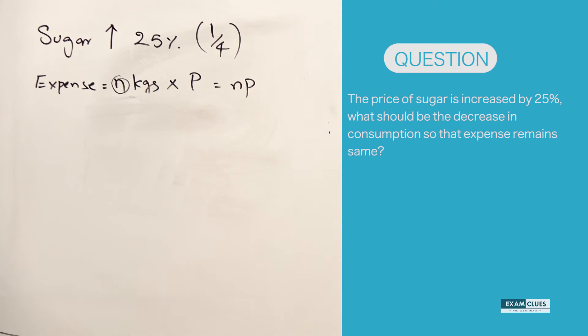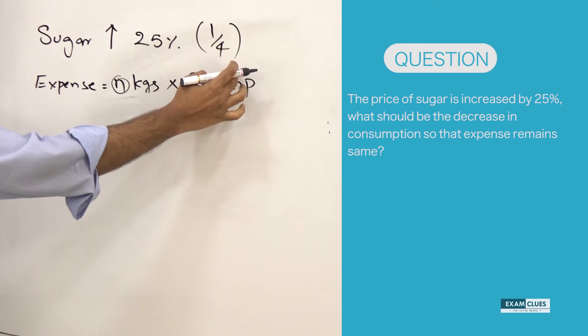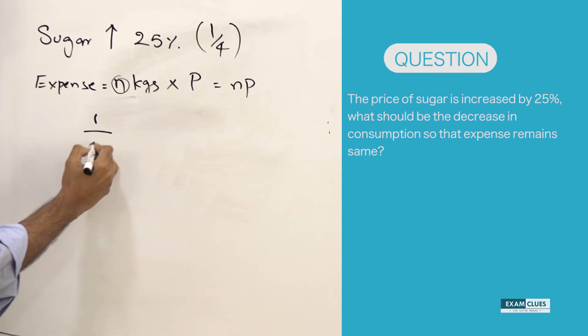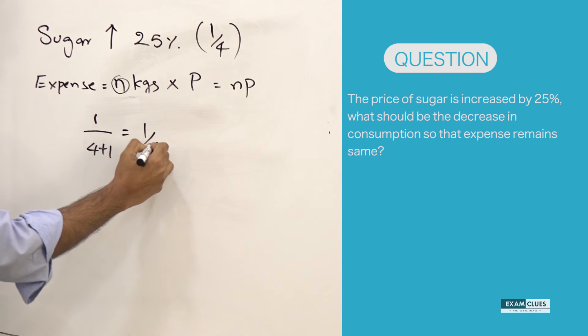And now the question is: by what percent should the consumption decrease? When the question is related to decreasing the consumption, what you should do is try to reduce this value, which can be done by simply adding the numerator to the denominator. So that is 1 by 4 plus 1, which is 1 by 5, which is equal to 20%.